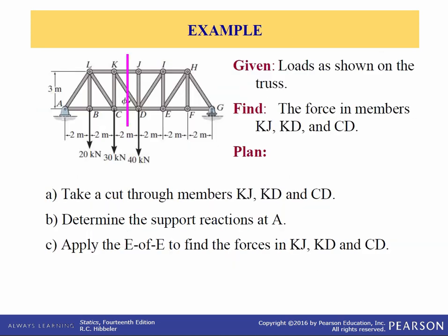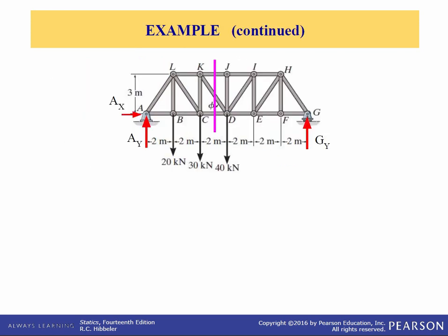Let's look at some examples. Given this truss with the loads as shown, find the forces in members KJ, KD, and CD. We're going to take the cut as shown by the purple line. That means we're going to need to know the support reactions at A. Then we'll apply the equations of equilibrium to the left side of the cut to find the unknowns. First, let's analyze the entire truss to solve for the unknown reactions at A, because we're going to be analyzing the left section.